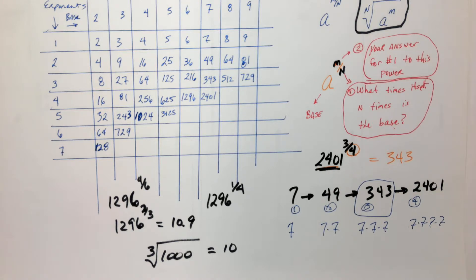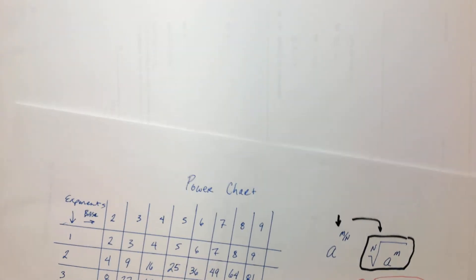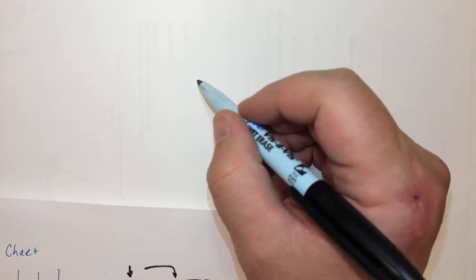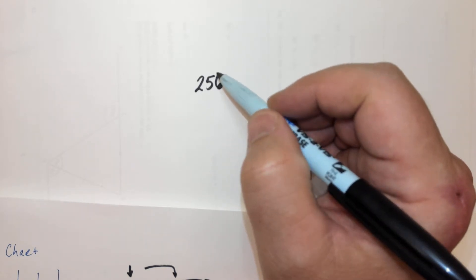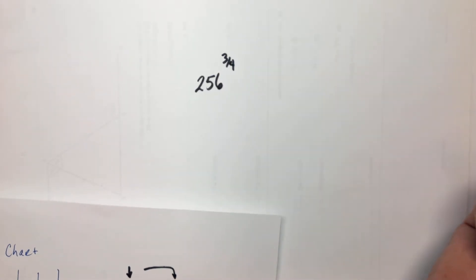Do you want to try another one? You want to try a tricky one? Yes. Okay. Here, I'll get you started on the first one and then I'll write the second one. And you guys have this chart? Yeah. Let's do... 256 to the 3/4 power.